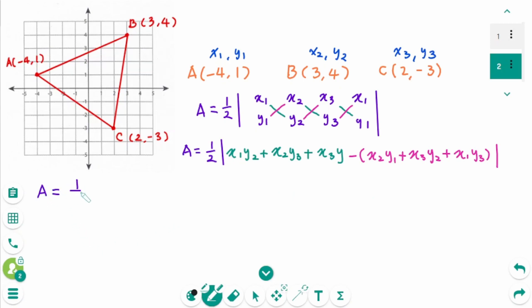Area equals one-half times the absolute value sign. Write: -4, 1; 3, 4; 2, -3; then the last one: -4, 1 again. Then cross. The important thing is that the first ordered pair must be written one more time at the end.